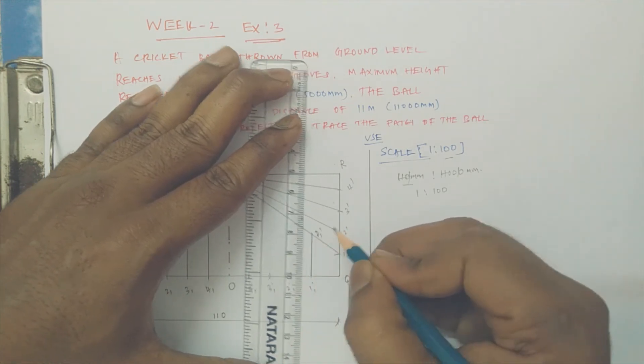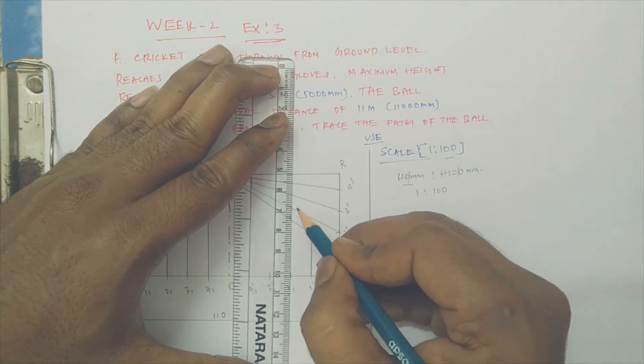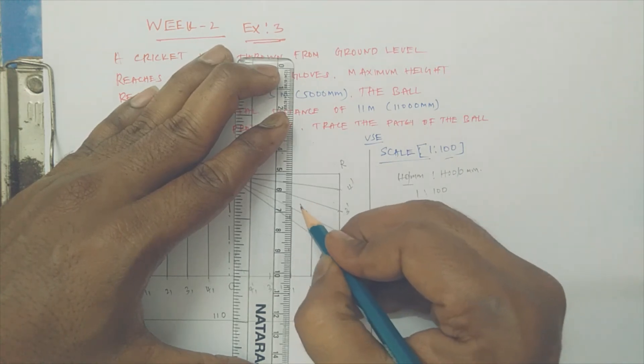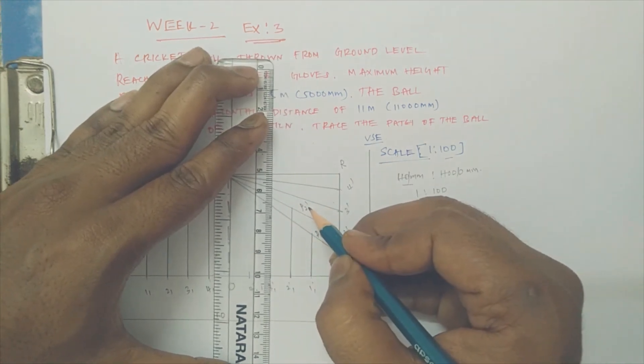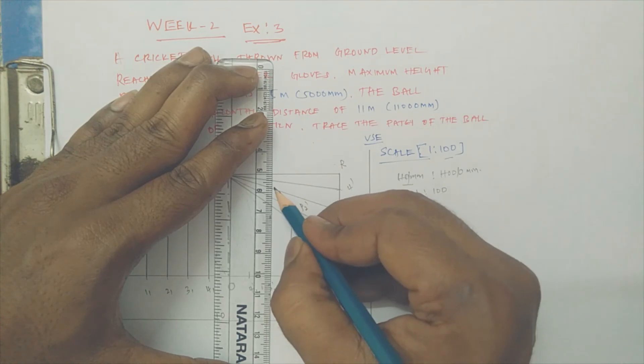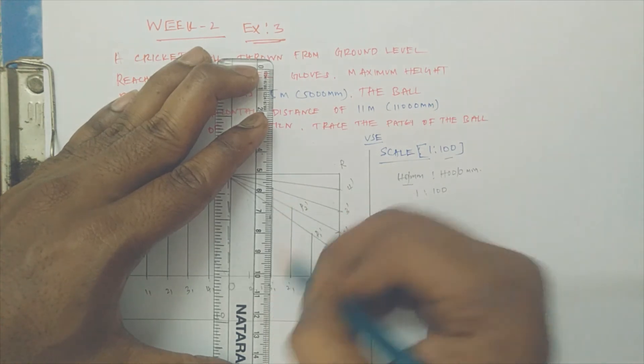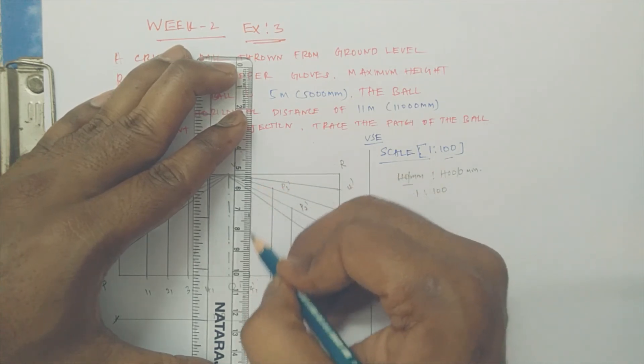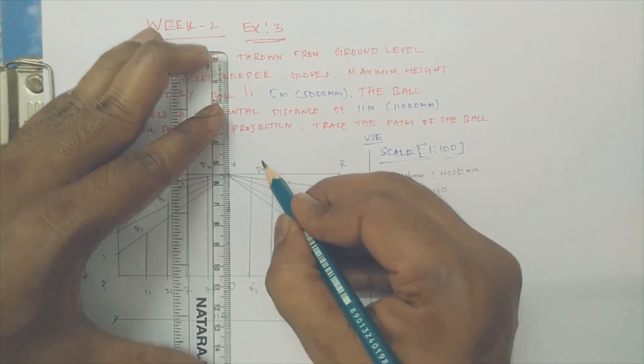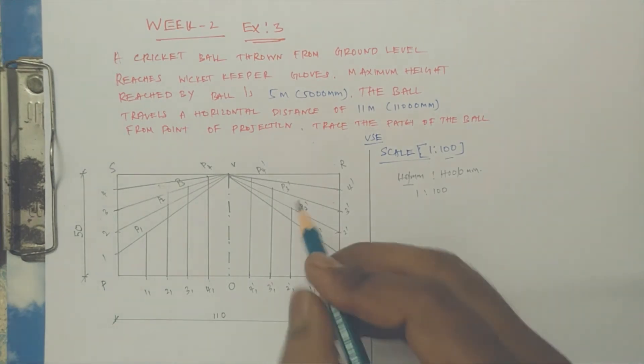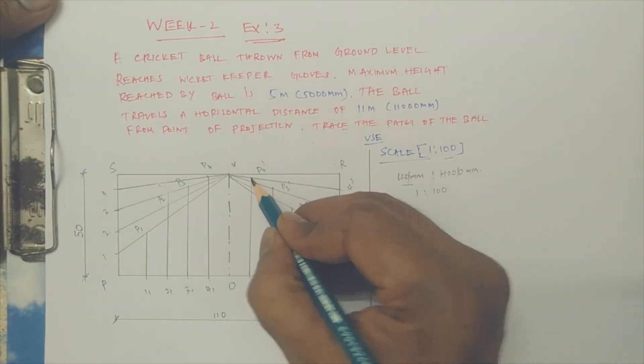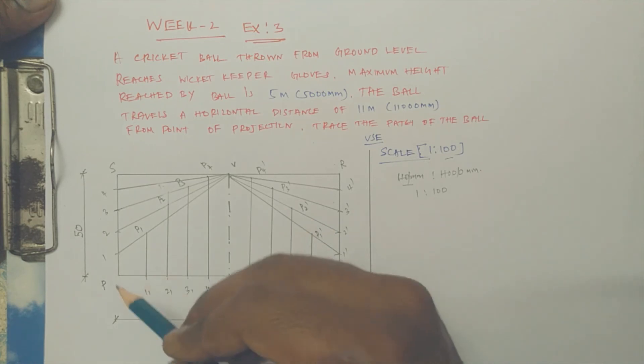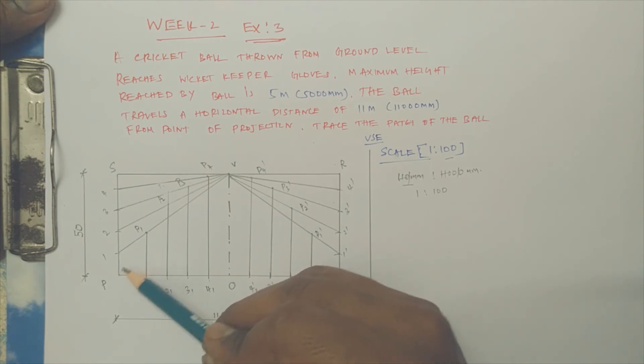Similarly P1-dash, P2-dash, P3-dash, and P4-dash. If you are increasing the division, you may get better accuracy. Let me connect from P to P1, P2, P3 by a smooth circular curve.